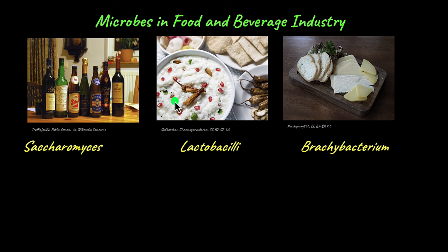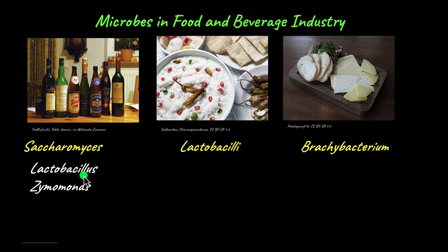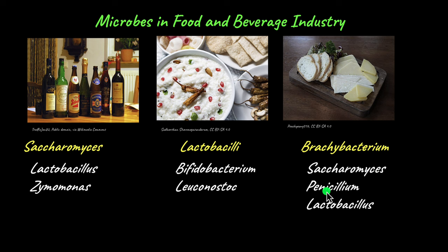Some microorganisms used to produce these foodstuffs: Saccharomyces, a species of yeast, is the most common microorganism used to produce alcoholic beverages like wine and beer. Lactobacilli is a lactic acid bacterium used to produce curd, yogurt, sauerkraut, and kimchi. Brachybacterium is a type of bacterium generally used to produce cheese. There are also several other species — Lactobacillus and Zymomonas for alcoholic beverages; Bifidobacterium and Leuconostoc for curd or yogurt; Saccharomyces, Penicillium, and Lactobacillus to produce cheese and bread.